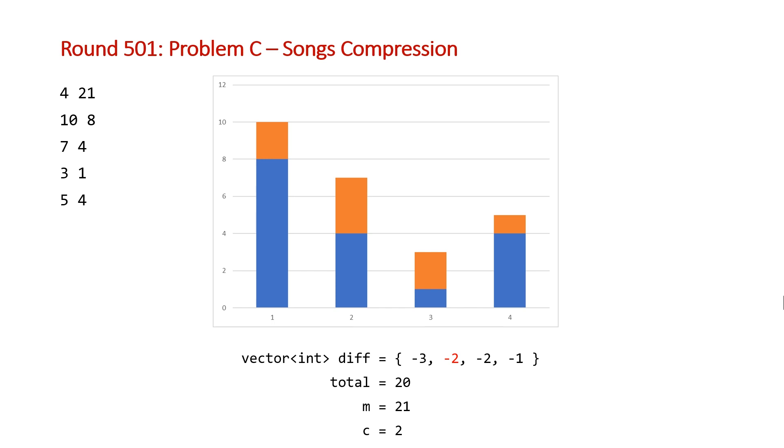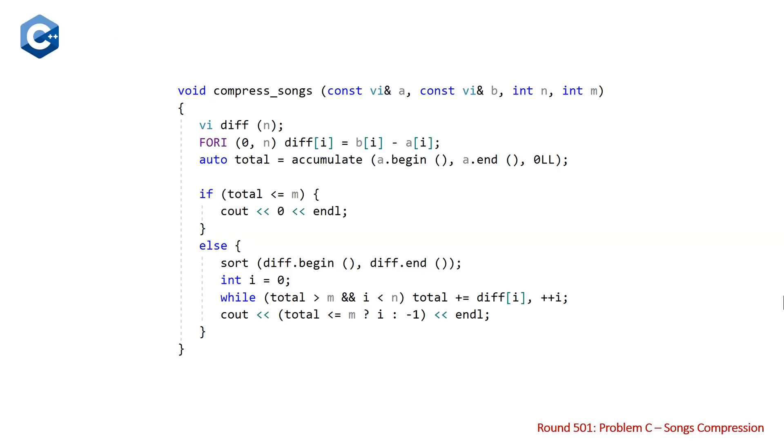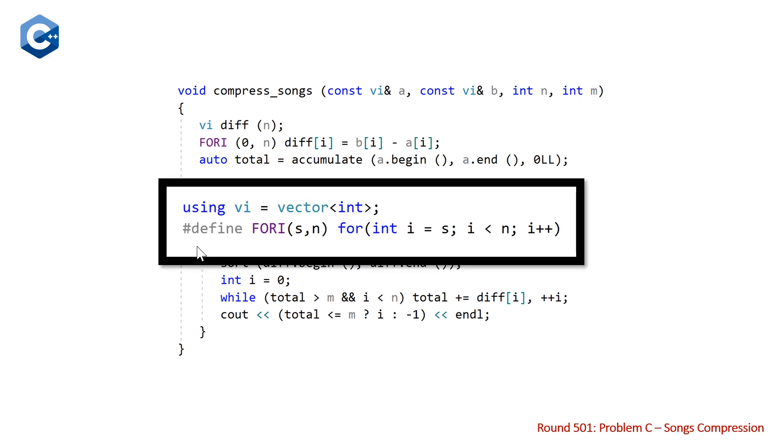Let's take a look at our code. Here is our C++ solution. We have our function compress songs, which takes two vectors of integers. Note that we're using vi here, which is a type alias, and 4i, which is just a macro. So vi stands for a vector of integers, and 4i is just a loop from our start value to our end value.